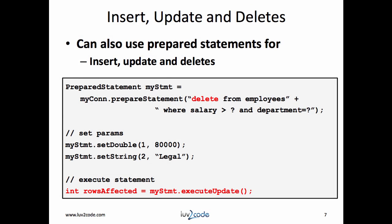We can also use prepared statements to insert, update, and delete. In this example, I'm going to perform a delete where a given salary and department is given. I'll set the salary to 80,000, set the department to legal, and then I'll run a method called executeUpdate. This method will perform the SQL operation and it will also return the number of rows affected — in this scenario, it'll be the number of rows that were deleted.